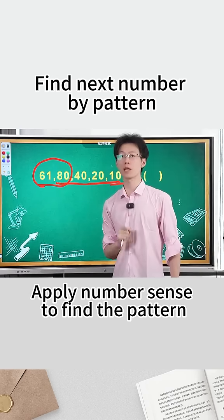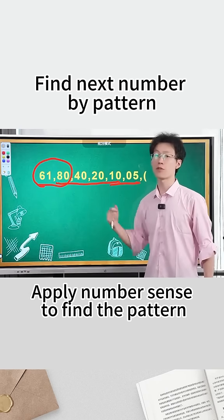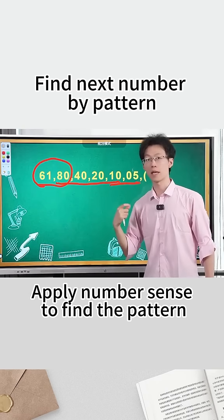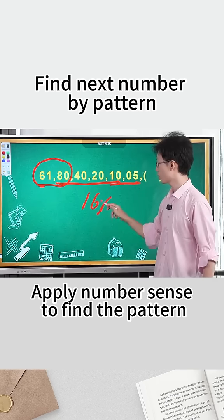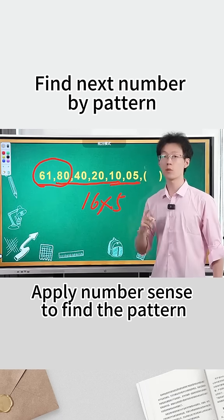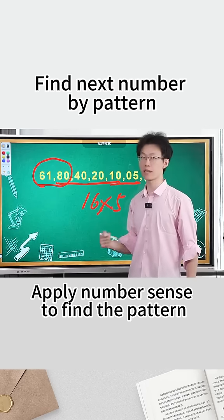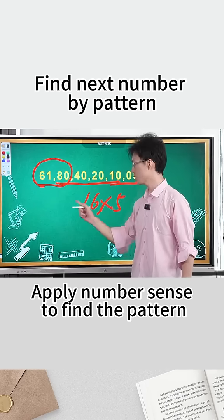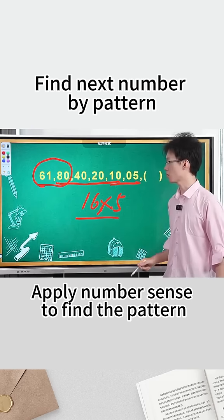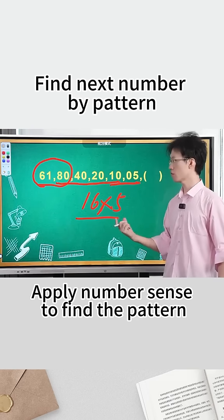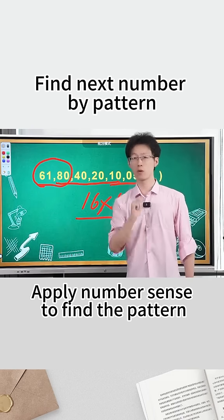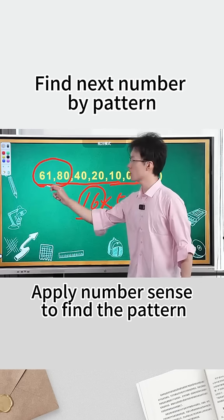So how can 80 and 61 be related? This is to test the sensitivity to numbers. In my opinion, the number 80 can be directly decomposed into 16 times 5. This is the sensitivity to numbers. For example, if you are given a number 13 or 17, can you immediately think that it is a prime number that cannot be decomposed anymore? If you are given 80, can you think of immediately decomposing it into 4 times 20 or 16 times 5? This is the sensitivity to numbers.